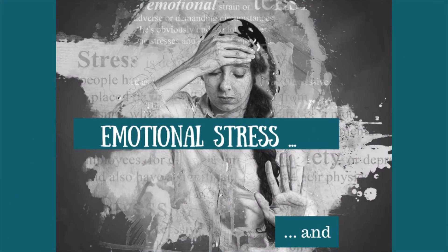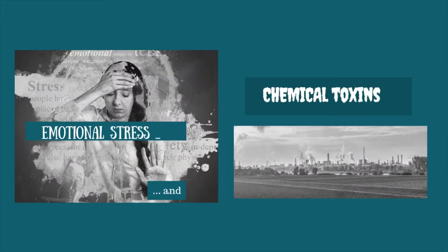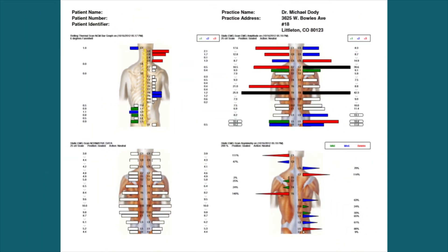The second type of subluxation occurs when the nervous system is interfered with by an emotional stress or chemical toxin. When the nervous system becomes overwhelmed by these factors, it creates an imbalance in how our nerves perform. When the motor nerve — the nerve controlling the muscles — is imbalanced, it causes the muscle on one side of the spine to contract harder than on the other, causing a misalignment in the vertebra. The misalignment further interferes with the nerve, creating a repeating neurological pattern.